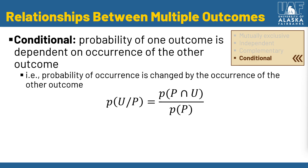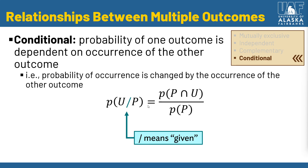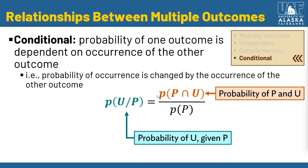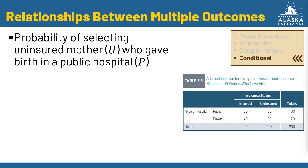To put this in notation form, the slash symbol means 'given.' So the probability of U given P is equal to the probability of P and U, divided by the probability of P. These formulas with conditional probability can get complex. Let's ground ourselves with an example. This is a table from the textbook — a cross-tabulation of women who gave birth, showing the type of hospital — public or private — and their insurance status — insured or uninsured.